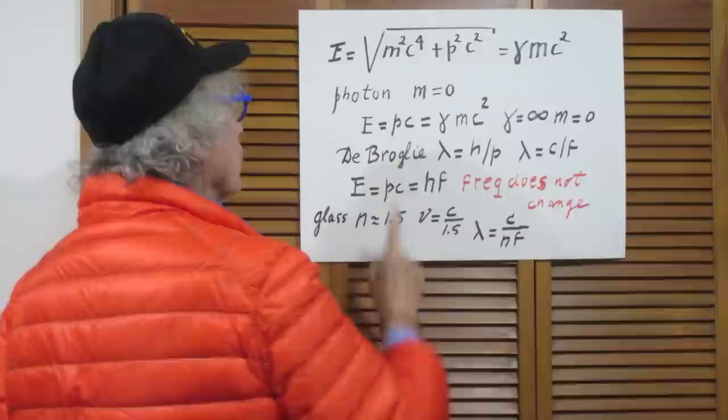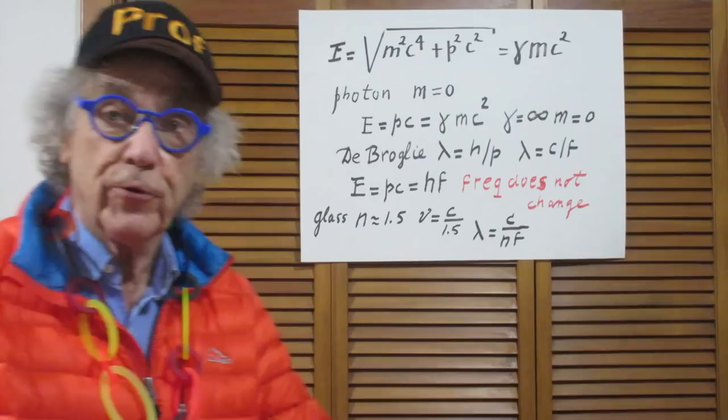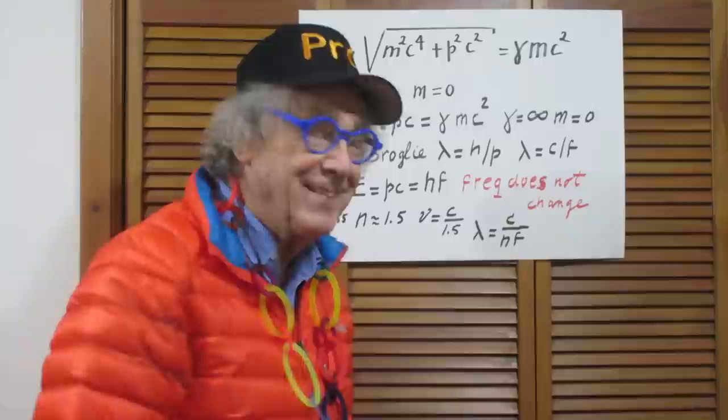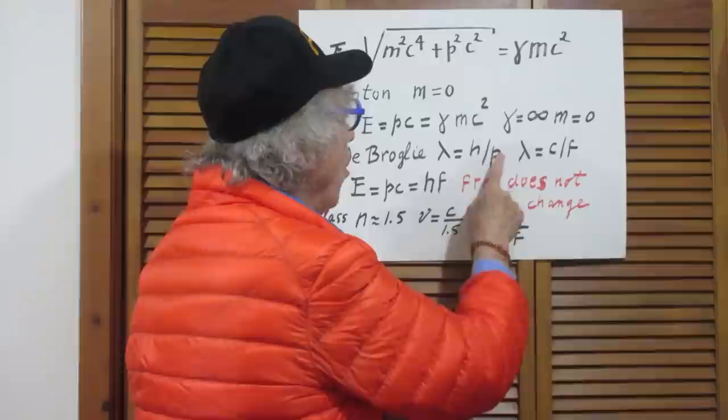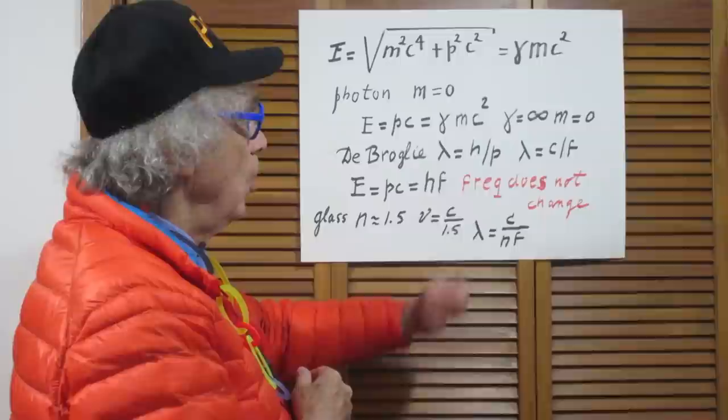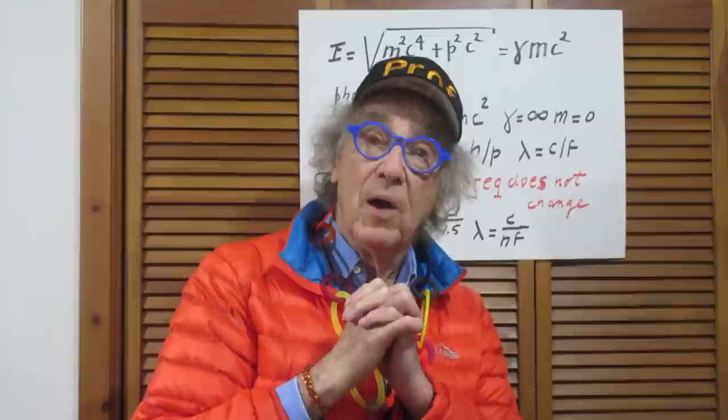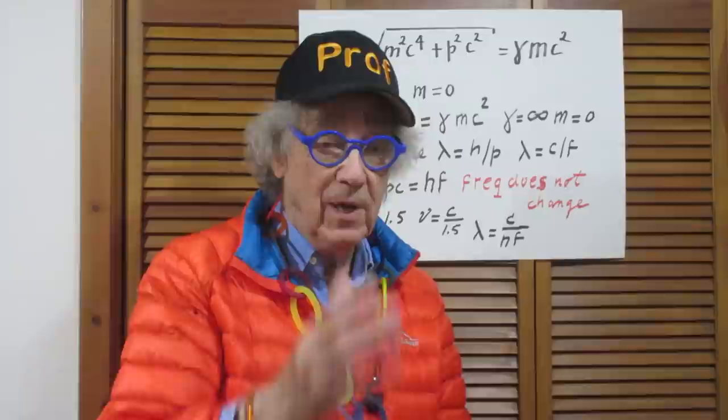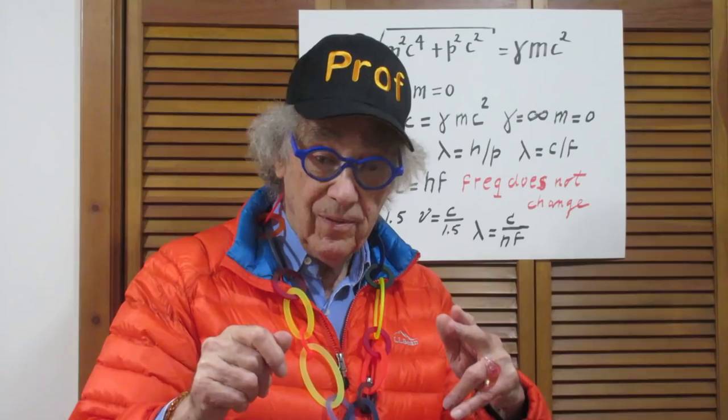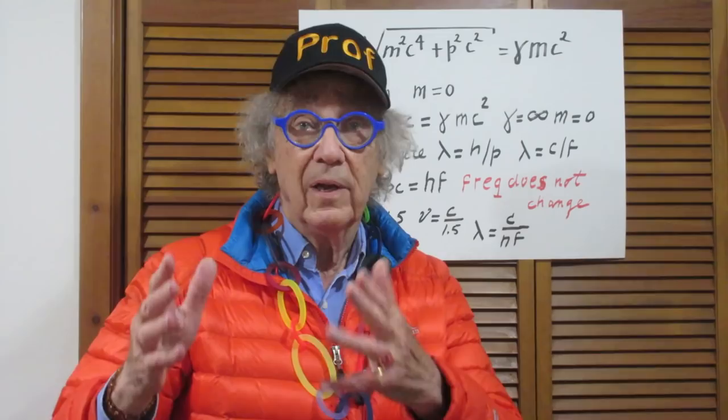We now go to de Broglie, for which he got the Nobel Prize by the way. Einstein didn't get the Nobel Prize for that. De Broglie stated that the wavelength of any particle that has momentum p is h divided by p. So the larger the momentum, the smaller the wavelength, and h is Planck's constant. Now lambda equals c divided by f. That's still Newtonian, because if something travels with the speed of c, then the distance that it has traveled is the velocity times time, and one over time is frequency.